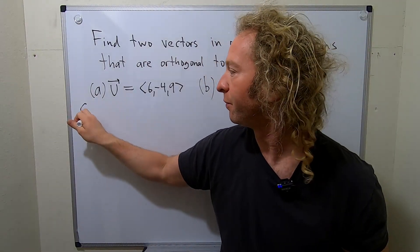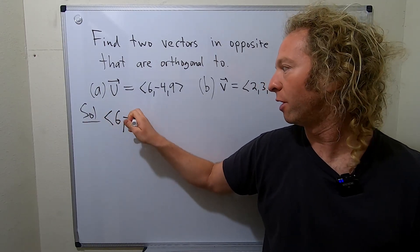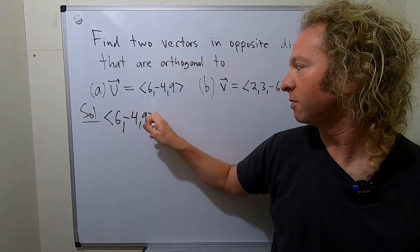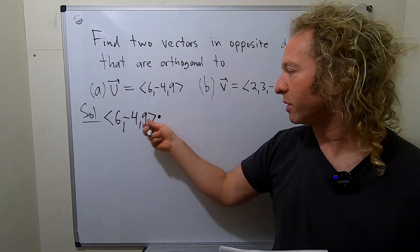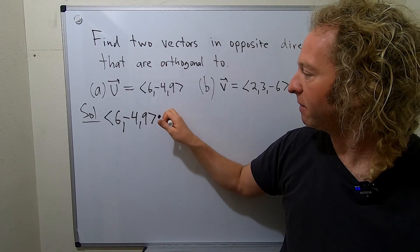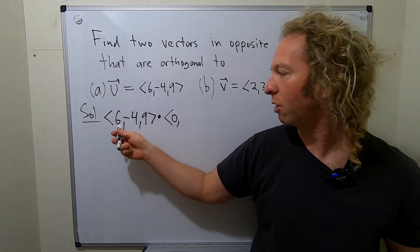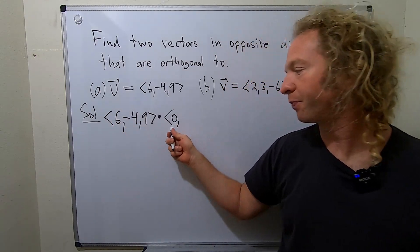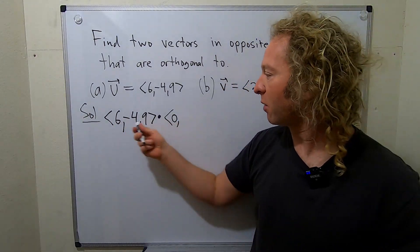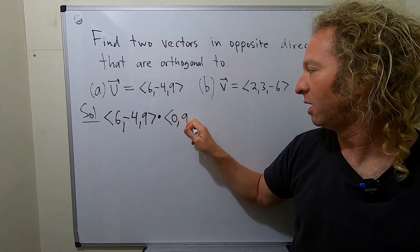Solution. So we'll start by writing this down. So 6, negative 4, 9. And then we have to put something here so that when we take the dot product the result is zero. So I'm thinking maybe get rid of the 6. We can do that by putting a zero here. Because recall when you multiply 6 times zero you get zero. So now we need to make these go away. So I'm thinking that this might work. So 9 and 4.